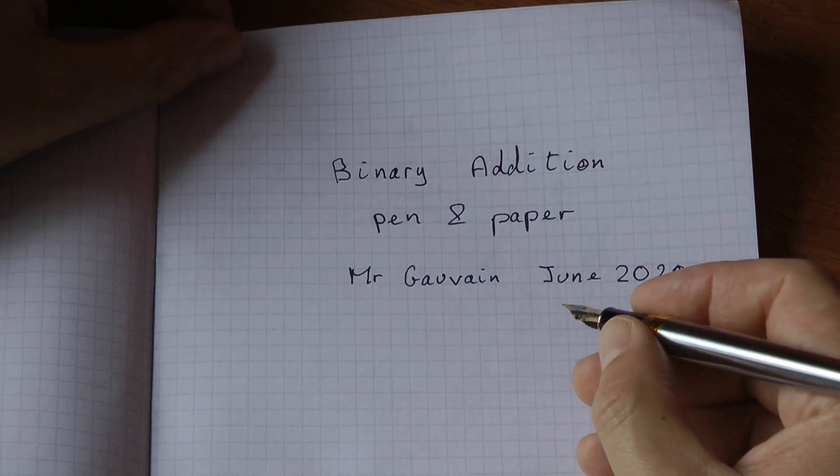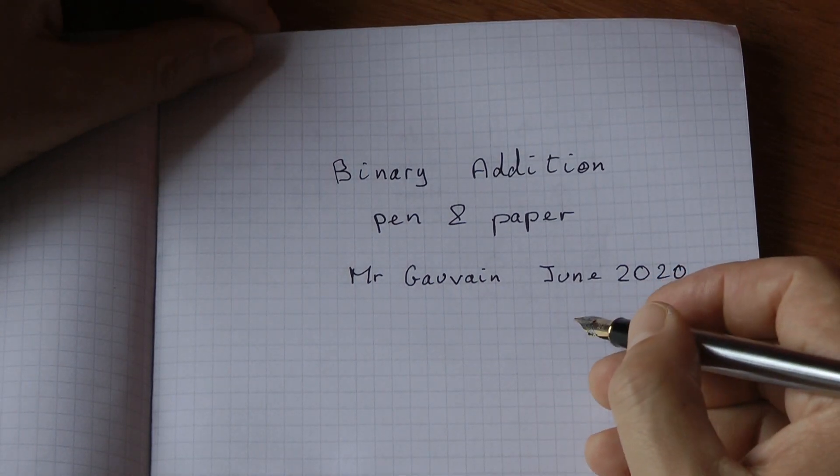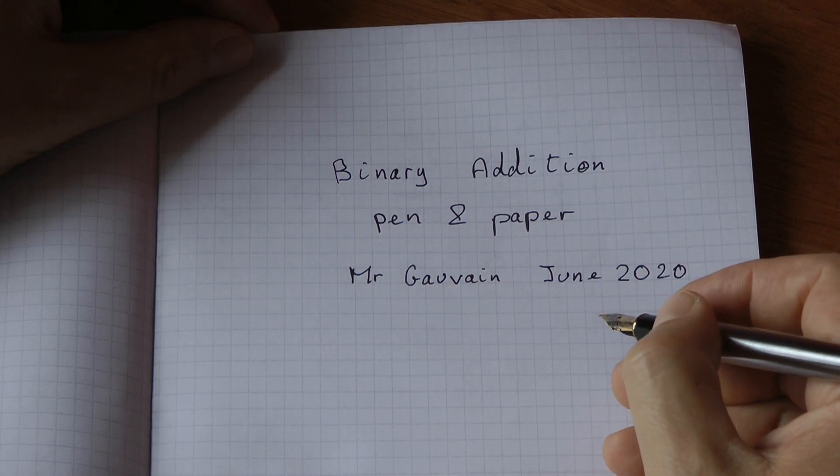Welcome to this screencast. We're going to do binary addition using pen and paper. This is for GCSE Computer Science. I'm Mr. Govan.